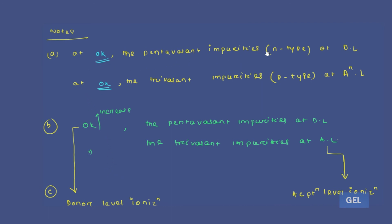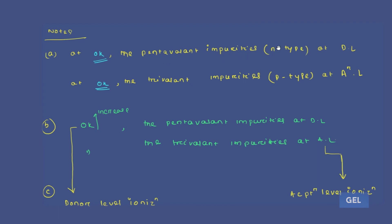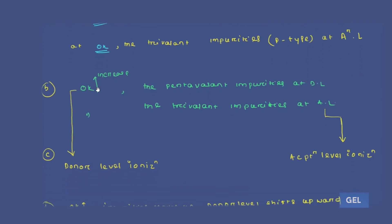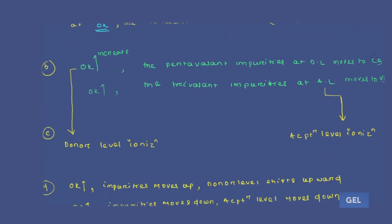Key points: at 0K, the pentavalent impurities in n-type are at the donor level, and the trivalent impurities in p-type are at the acceptor level. If you increase the temperature from 0K, the pentavalent impurities at the donor level move to the conduction band. Similarly, the trivalent impurities at the acceptor level move to the valence band. This movement of pentavalent impurities to the conduction band is called donor level ionization, and the movement of trivalent impurities to the valence band is called acceptor level ionization.